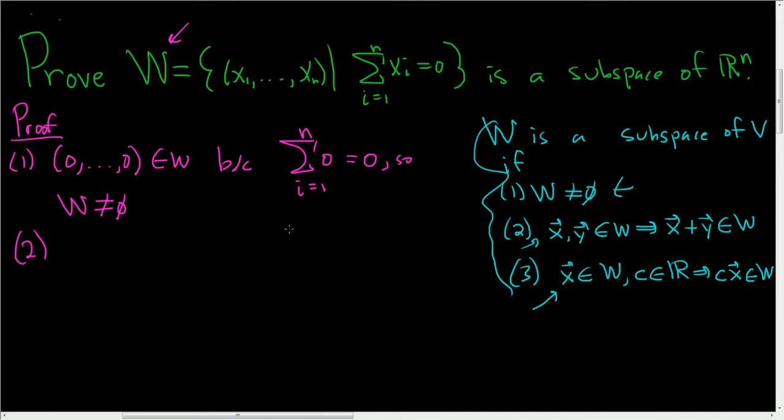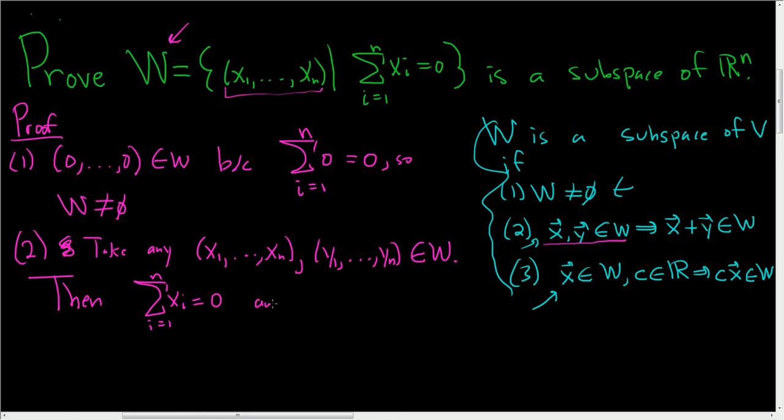For the second condition, we have to take two vectors in W and show that the sum is also in W. That's this one here. So take any, and I'll go ahead and just write them like this. So I guess we could use X and Y. So take (x_1, ..., x_n) and (y_1, ..., y_n) in W. Then let's go ahead and write down what this means. This means that the sum of the components of the first vector is zero. And the sum of the components of the second vector is also zero.